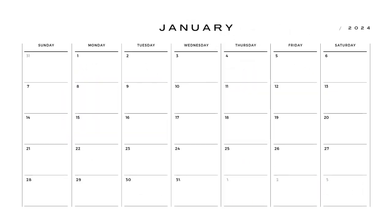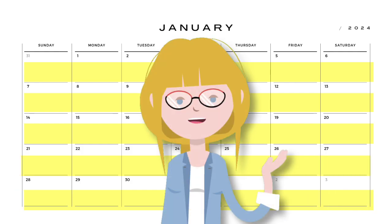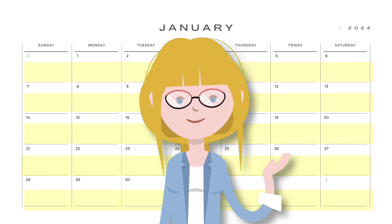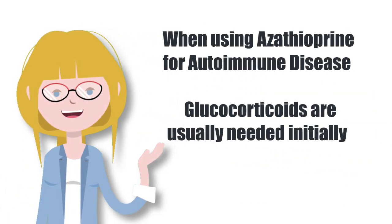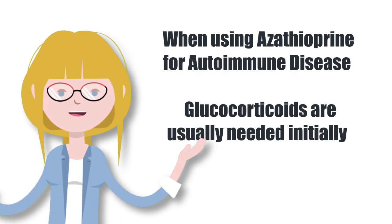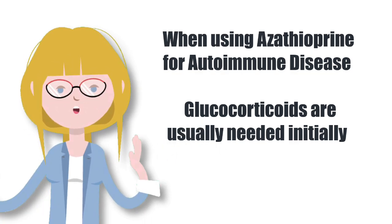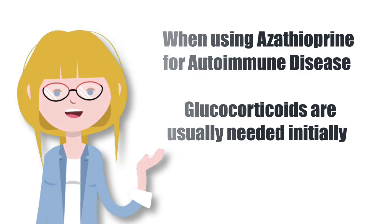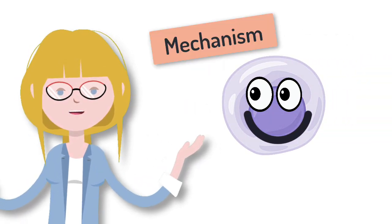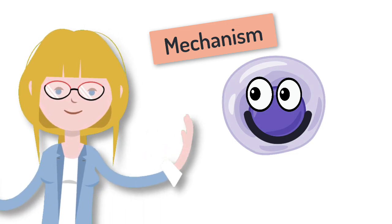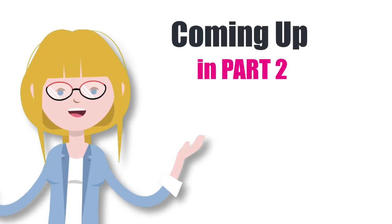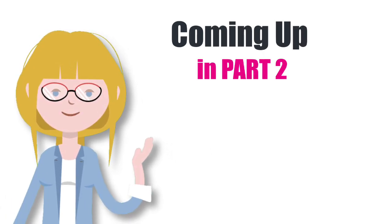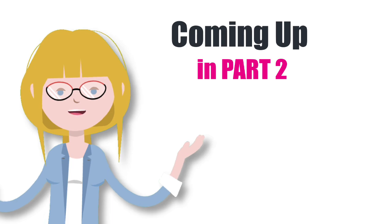But this immunosuppressant effect of azathioprine doesn't happen overnight — it actually takes several weeks for azathioprine to have any clinical benefit at all. So when we prescribe azathioprine in inflammatory bowel disease or other autoimmune diseases, we typically give steroids initially alongside azathioprine and then wean the steroids as the azathioprine comes into effect. The immunosuppressant properties of azathioprine come about because of its effect in lymphocytes, but now I want to make an important distinction between the therapeutic effects versus the side effects of this medication.